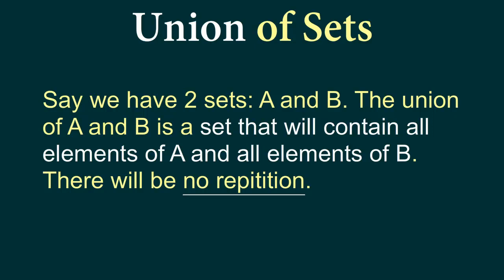Union of sets is defined as follows. If we have two sets, set A and B, the union of A and B is a set that contains all elements of A and all elements of B. There will be no repetition in the set.